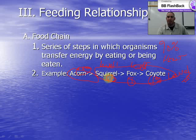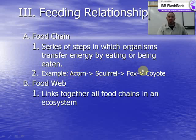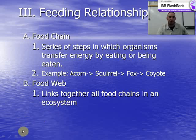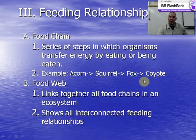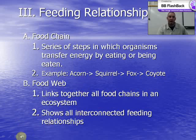Each of these levels is a trophic level in the food chain. A food web explains things better because squirrels, foxes, and coyotes don't always eat in a strict linear order. A food web links all organisms together and shows all possible feeding relationships — the coyote could eat the squirrel or the fox, the fox could eat the squirrel, and so on.